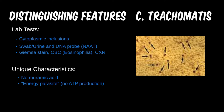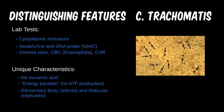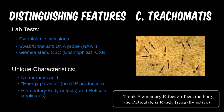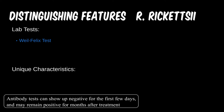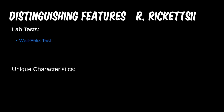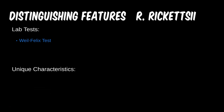Chlamydia exists in two forms: an elementary body and a reticulate body. The elementary body is spherical, non-replicating, and is the infectious part of this semi-parasitic bacteria. The reticulate body is a larger intracellular form that replicates. For Rickettsia, the Weil-Felix test is a classic serologic test — we're looking for antibodies in the blood — but with sensitivity around 30% and specificity in the 40s, it's not used much anymore. Some recent studies show genetic markers suggesting Rickettsia is closely related to mitochondria.